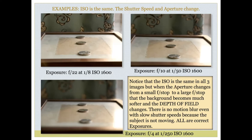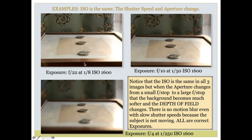Let's say we're changing the depth of field. In these examples the ISO is staying the same. My first image was at f/22, ISO 1600. I set up my ISO first, put that into the camera, then set my aperture to f/22. While pointing at my subject, I take a light reading. As I change my shutter speed, the light meter indicator hits the middle at 1/8s, and I take the picture.